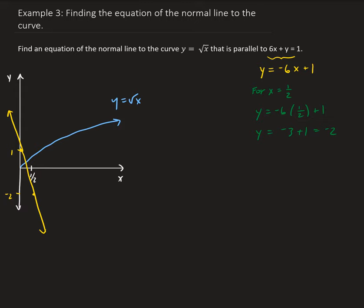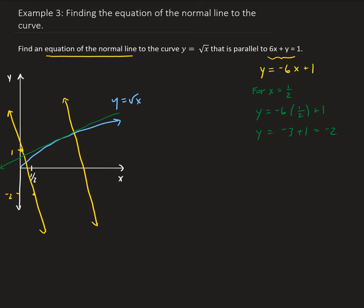So we want to find the equation of the normal line. The normal line means that it's going to be perpendicular to the tangent line. So the line we want is going to be somewhere out here, and it's going to be parallel to the equation of the line that we're given. The tangent line and the normal line and the graph of square root of x all intersect at this one point.